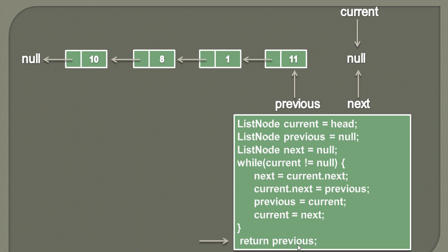The last step is to return previous — this previous becomes our new head. Initially head pointed to 10, then 8, 1, 11. Now as previous becomes our new head, the linked list is reversed: the first node is 11, second is 1, third is 8, fourth is 10, and then it points to null. Here previous becomes our new head and we exit the algorithm.